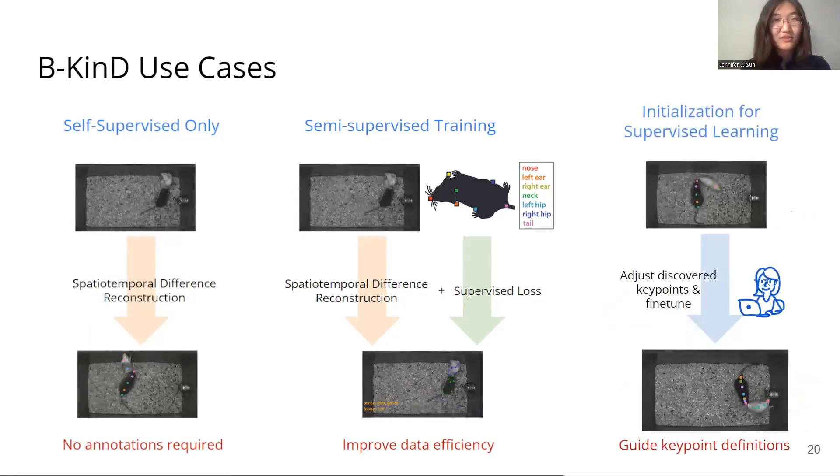Therefore, BeKind can also be used in a human-in-the-loop setup to give feedback on which keypoints are easily discoverable. Then users can adjust to discover keypoints and retrain.